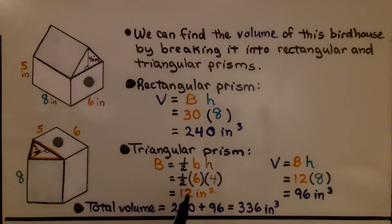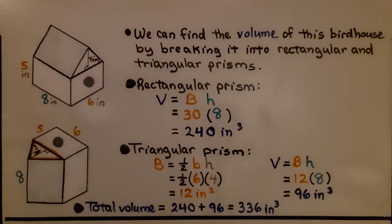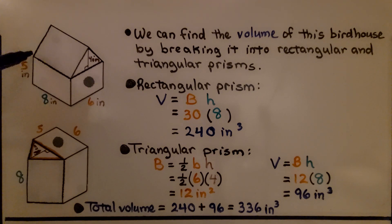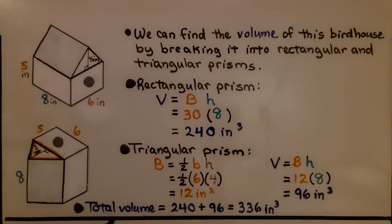That twelve inches squared is the base area for the triangular prism. To find the volume, we do base area times height: twelve inches squared times a height of eight — that eight is the depth of the prism — giving ninety-six inches cubed. The total volume is two hundred forty inches cubed plus ninety-six inches cubed, which is three hundred thirty-six inches cubed.